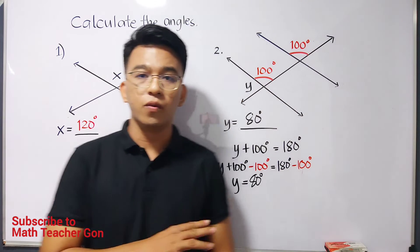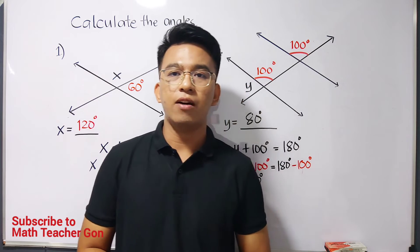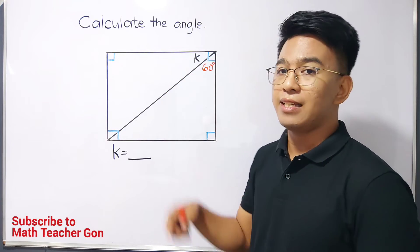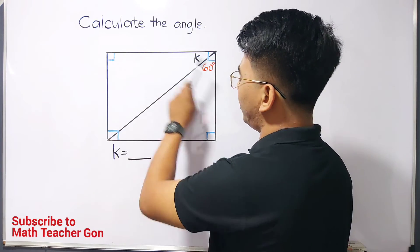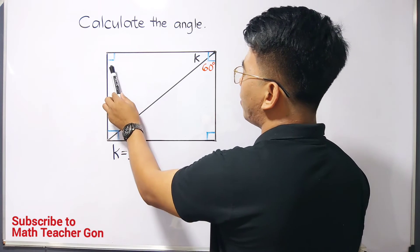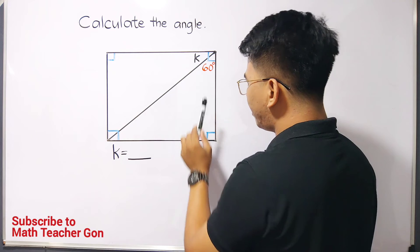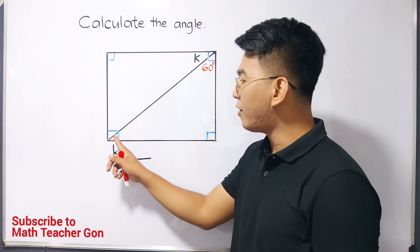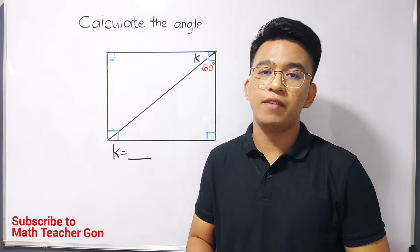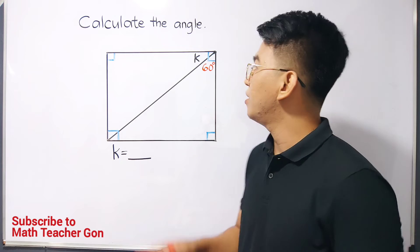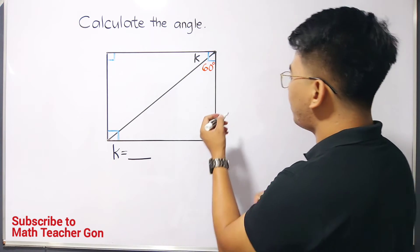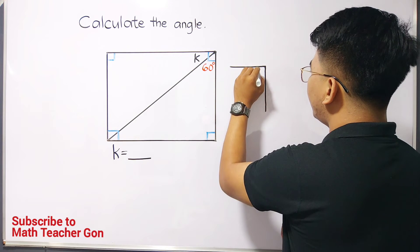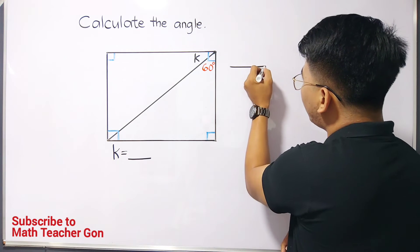Now, in the next part of our video, we will talk about another example on how to calculate angles given this kind of figure. So, let us calculate the missing angle which is angle k. Now, we have a clue that this one is a rectangle and as you can see, we have a 90 degree angle, 90 degree angle, 90 degree angle, and 90 degree angle given this symbol. Kapag meron tayong box na nakita, automatic, the measurement of that one is exactly 90 degrees. So, meron tayo dito, when we break down this part, ito yung maging itsura nya.